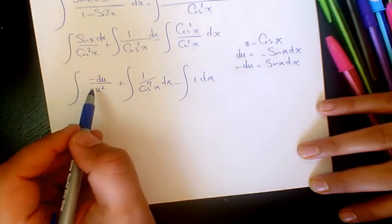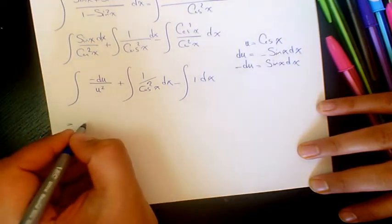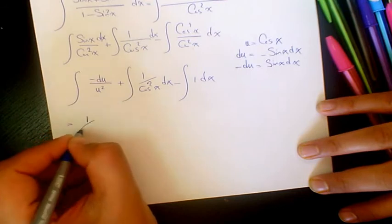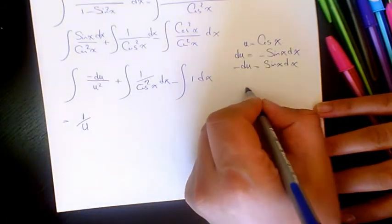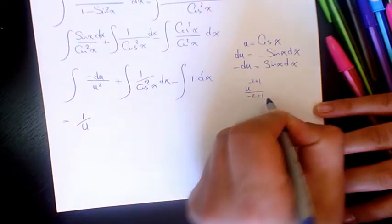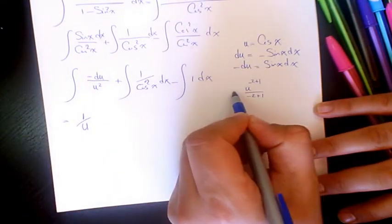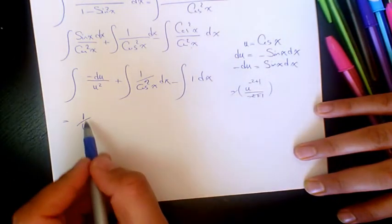So now we have negative du over u squared, which will be just 1 over u. We had it before, or you can say u to the power of negative 2 plus 1 divided by negative 2 plus 1. And the negative over there, negative and negative cancel out, is going to be u to the power of negative 1, which is 1 over u.